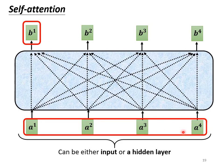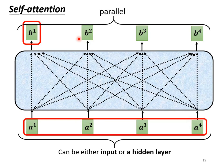Let's talk about how to get b2 from this row of vectors. The operation to get b1 from this row of vectors is exactly the same as getting b2 from this row of vectors. What I want to emphasize is that b1 to b4 don't need to be generated sequentially. You don't need to finish b1 before generating b2, then b3, then b4. From b1 to b4, they are calculated simultaneously.